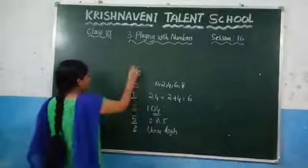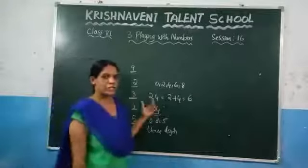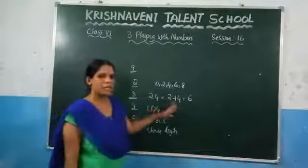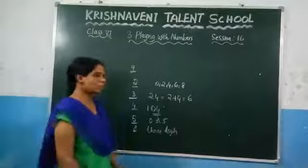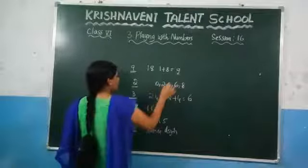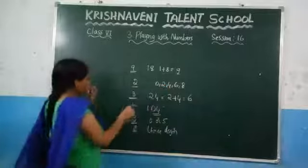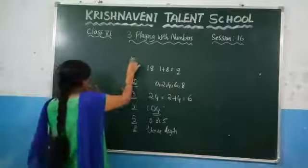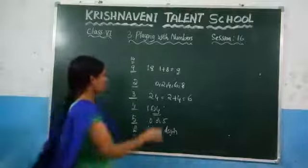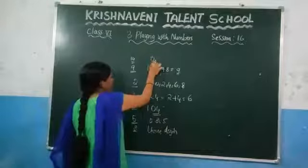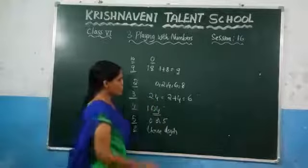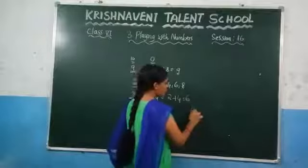And after that, we discussed the divisibility rule for 9. What it states: you need to take the sum of the digits. If the sum of the digits is divisible by 9, we can say that the given number is divisible by 9. For example, if you take 18: 1 plus 8 is 9, and it is divisible by 9. And after that, we discussed the divisibility rule for 10: if the unit digit of a number ends with 0, then those numbers are divisible by 10.